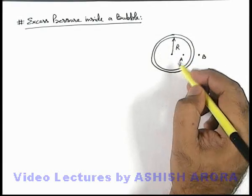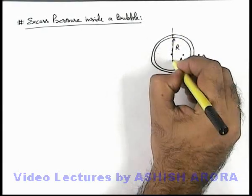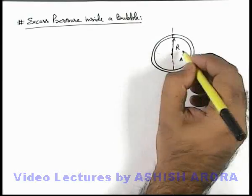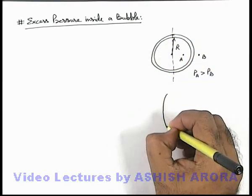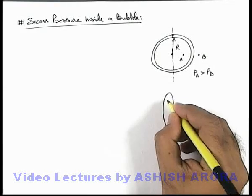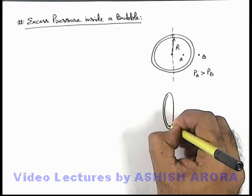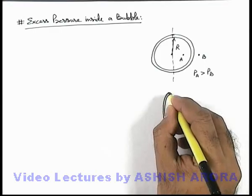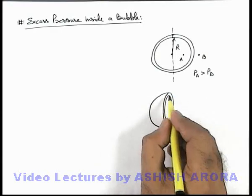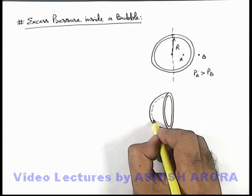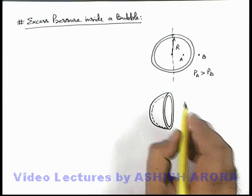Here also, to analyze this excess pressure, we divide the bubble in two hemispherical sections. And here you can see, if I just draw a hemispherical section, it will look like this. This is the hemispherical film of the soap bubble or the liquid bubble.